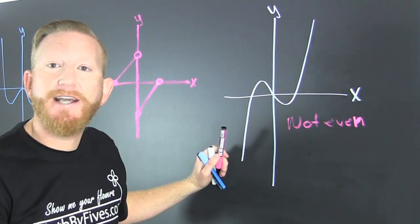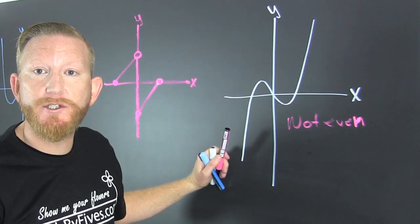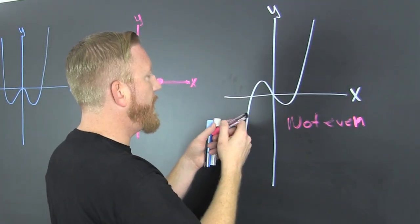So, now we check to see odd. It's odd if it has origin symmetry. So we flip it across the y.